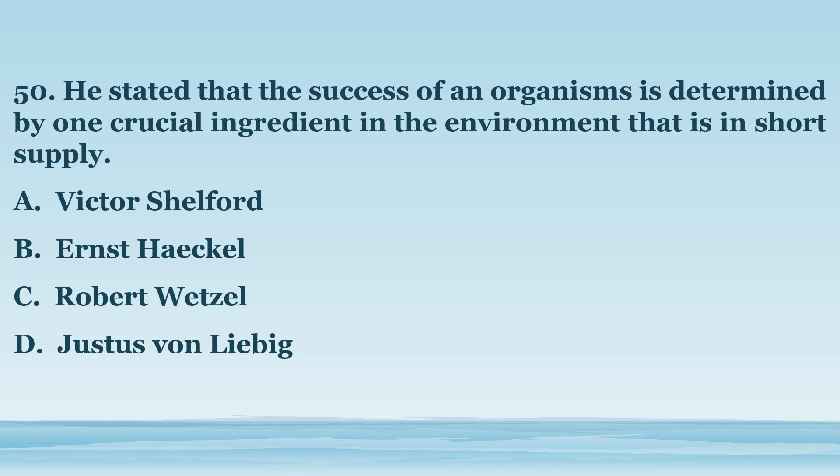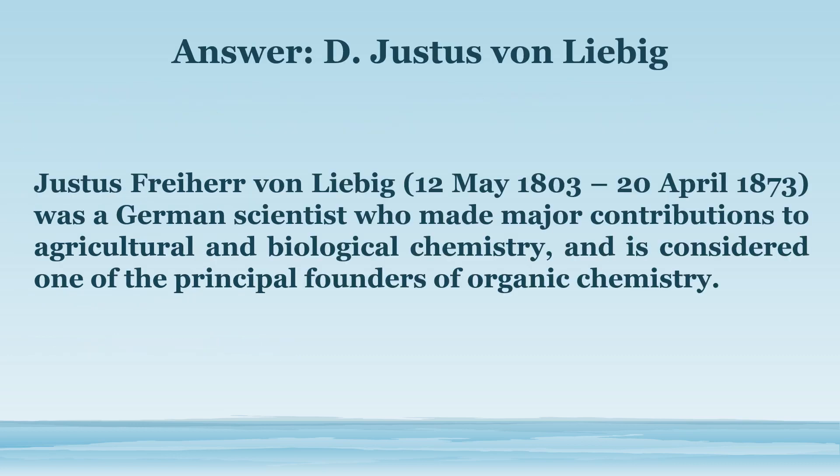Number 50. He stated that the success of an organism is determined by one crucial ingredient in the environment that is in short supply. A. Victor Shelford. B. Ernst Haeckel. C. Robert Wetzel. D. Justus von Liebig. The answer is letter D. Justus von Liebig. Justus Freiherr von Liebig (May 12, 1803 – April 20, 1873) was a German scientist who made major contributions to agricultural and biological chemistry and is considered one of the principal founders of organic chemistry.